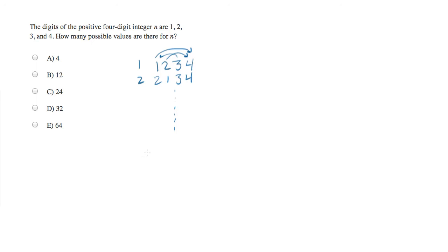Now, with four digits, there's really too many for us to write them all out. So what I'm going to do instead is use a method called the slot method to figure out how many possible combinations there are.